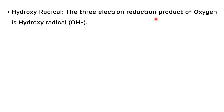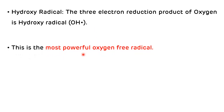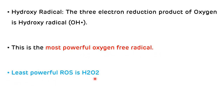Now the synthesis of hydroxyl radical: the three-electron reduction product of oxygen is the hydroxyl radical, which is the strongest among all oxygen free radicals — it is the most powerful oxygen free radical. The least powerful reactive oxygen species is hydrogen peroxide.